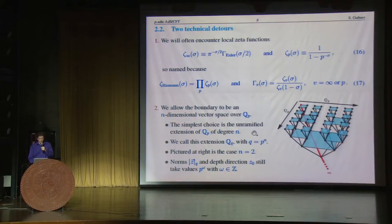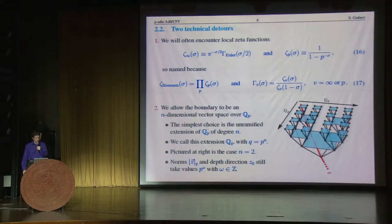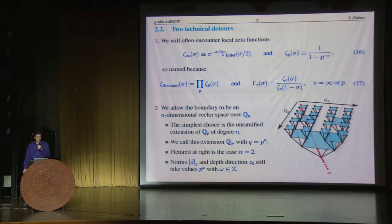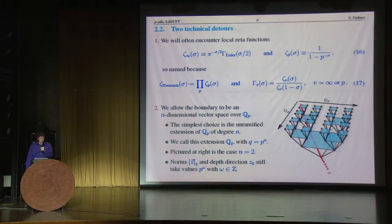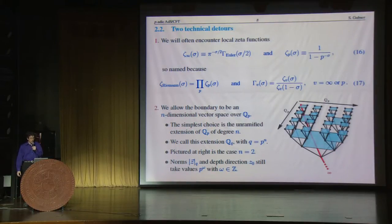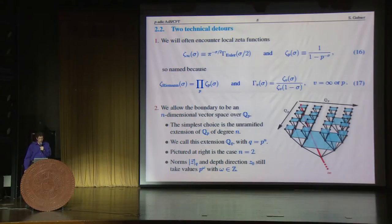My other technical detour is that I really want to tell you about AdS n+1 / CFT n. To do that, I had better introduce n-dimensional vector spaces over the p-adics. There's a nice way to do that — it's the so-called unramified extension of the p-adics, whose degree n is to be thought of as a dimension of the vector space we're considering over the p-adics. I've tried to draw it for the case n equals 2, which would be called a quadratic extension of the p-adics. There's a norm — norm subscript q — that is very similar to the p-adic norm, and the same depth direction z naught is still useful, so there's very little difference between the unextended and extended p-adic cases.